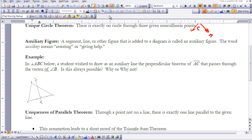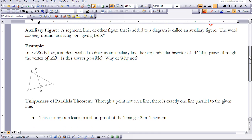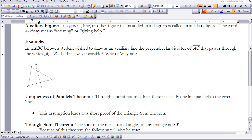We're going to skip over the unique circle theorem and go directly to the auxiliary figure. That is a line, a segment, line or other figure that is added to a diagram. The word auxiliary means assisting or giving help. Let's try this example here.